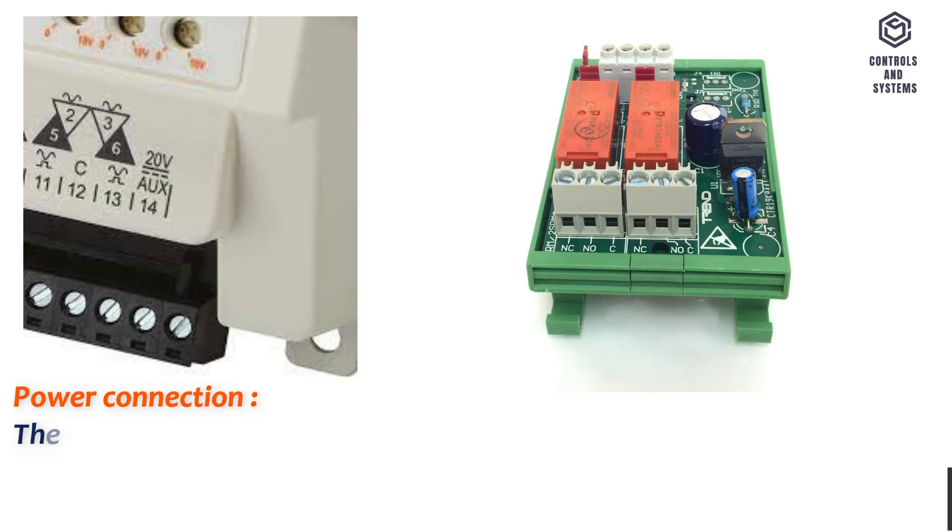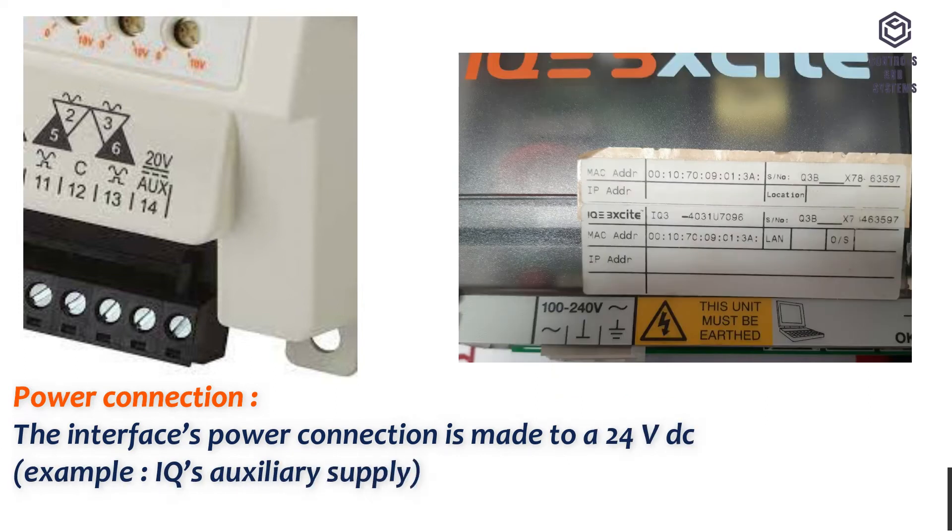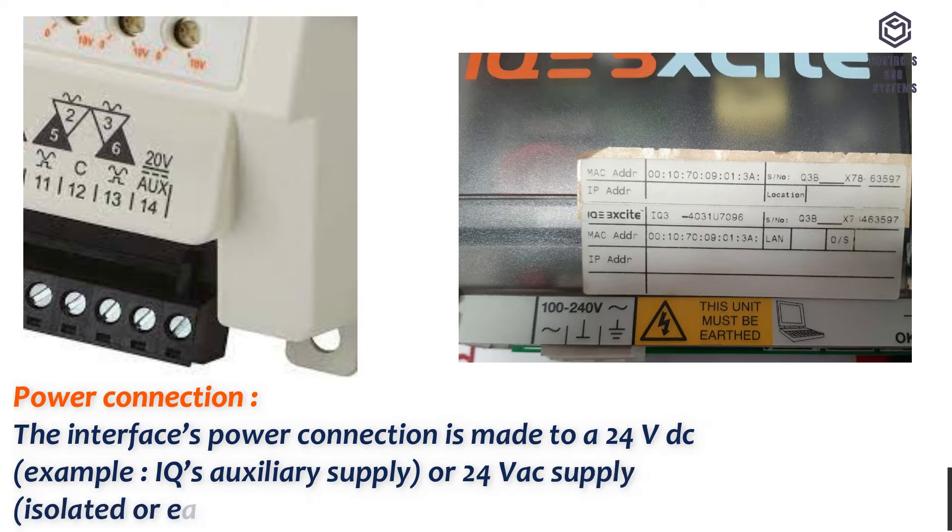Power Connection: The interface's power connection is made to a 24 volt DC, e.g. IQ's auxiliary supply, or 24 volt AC supply, isolated or Earth 2 IQ Earth, using 0 volt and 24 volt connections.